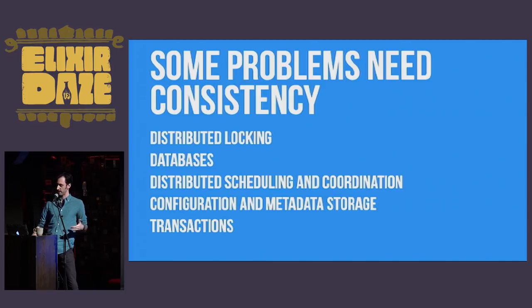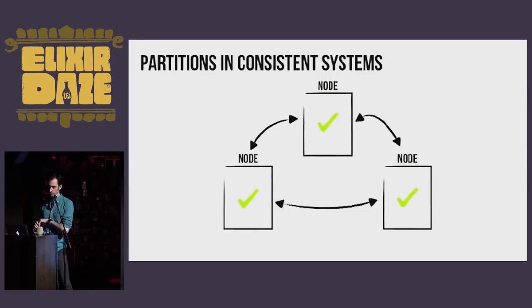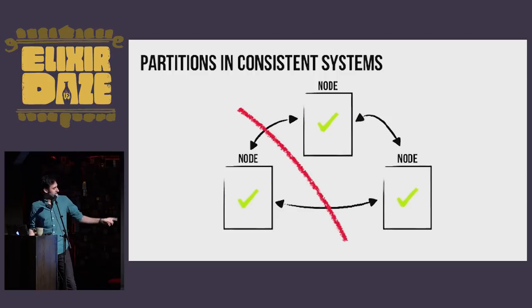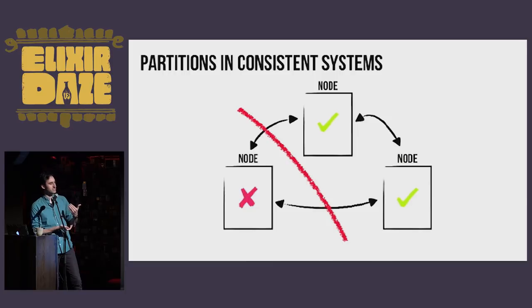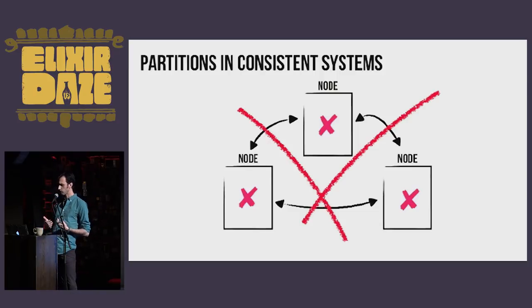Let's look at what it might take to build a more consistent system. In a consistent system, when one node gets partitioned off from the others, that node has to stop accepting reads and writes. It's not down in the sense that it's not offline to clients connected to it, but it has to start returning errors for reads and writes. Eventually, given enough node failures, your whole system has to stop accepting reads and writes, depending on the number of nodes and how partitions happen.